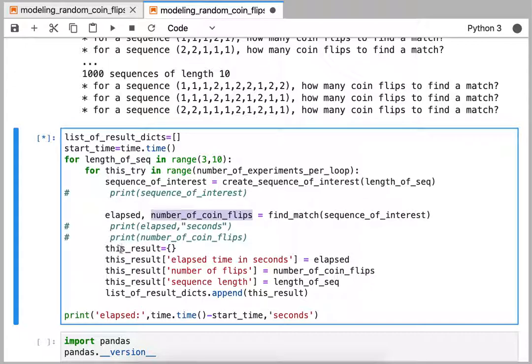And then we will store the outcome from that specific measurement into a dictionary. And then that dictionary goes into a list of dictionaries. Now we've got this list of dictionaries for each of the nested for loops. So we're going to have the sequence size changing, and we're doing it for many, many experiments.